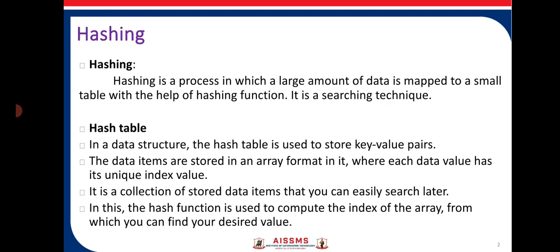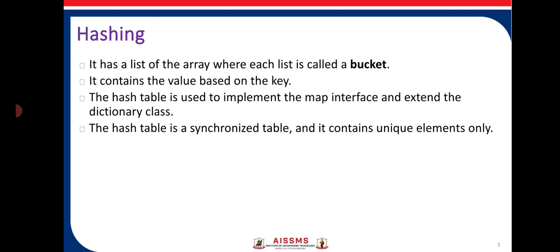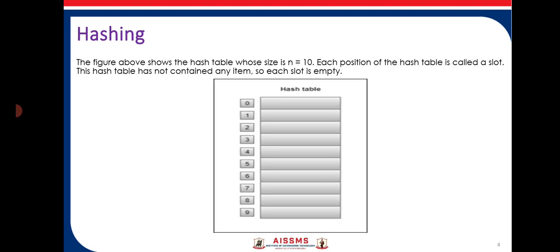In the hash table, the hash function is used to compute the index of the array from which you can find the desired value. It is a list of arrays where each list is called a bucket, containing values based on the key. Records are stored in the hash table not in a sequential fashion, but by applying hash functions that generate a key, and based on that key the information is stored. A hash table is used to implement the map interface, extends the dictionary class, is synchronous, and contains unique elements only.